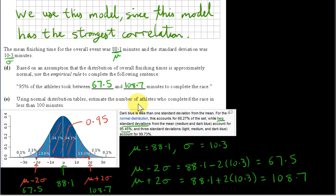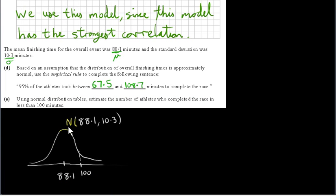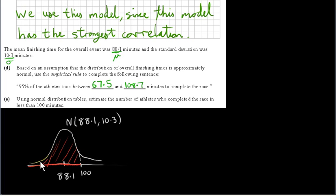Using normal distribution tables, we want to estimate the number of athletes who completed the race in less than 100 minutes. We sketch a normal distribution with mean 88.1 and standard deviation 10.3. All finishing times less than 100 minutes correspond to the area under the curve to the left of 100. To find this area, we transform to the standard normal distribution with mean 0 and standard deviation 1.